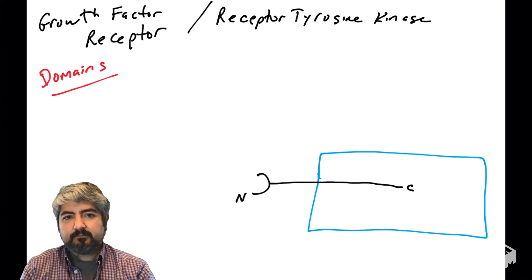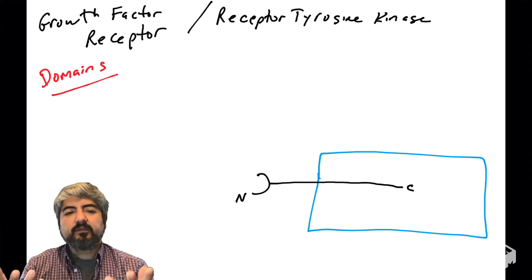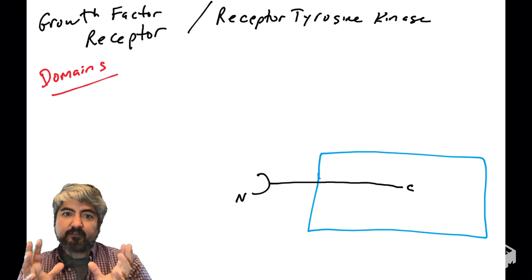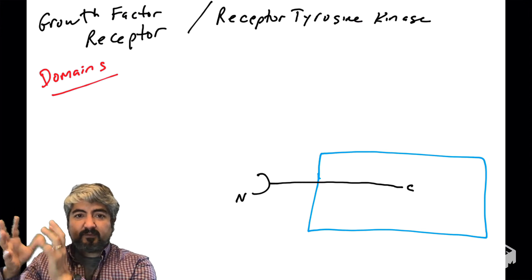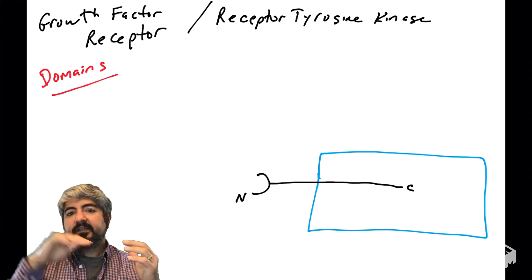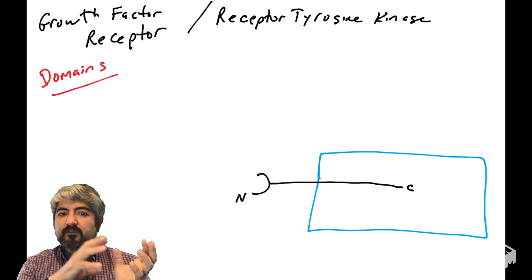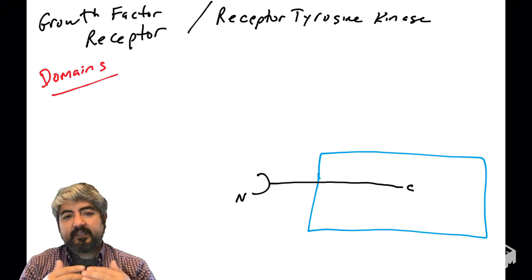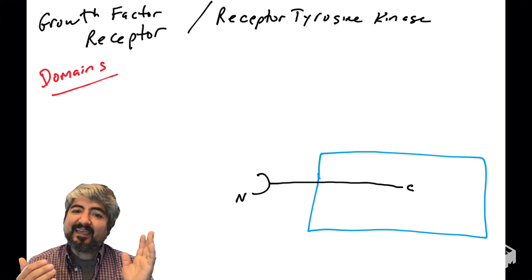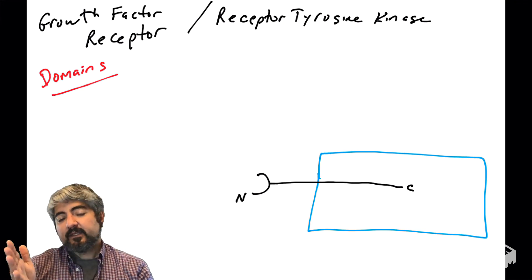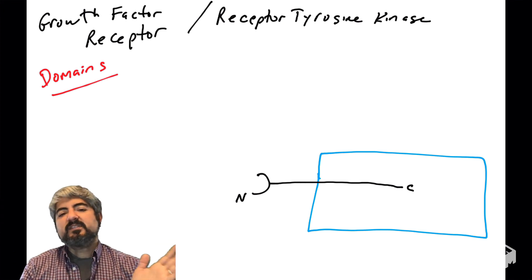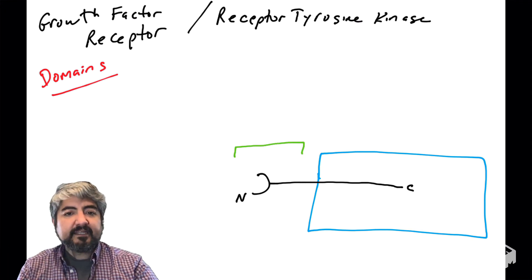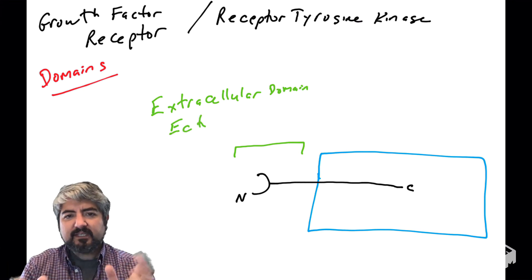We need to talk about the regions of this protein, because different regions have different functions. The term we use for regions of a protein is 'domains.' Different groups of amino acids fold and perform different functions, even though it's all one single polypeptide chain. The N-terminus of the protein is typically outside the cell, and the C-terminus is typically inside the cell.